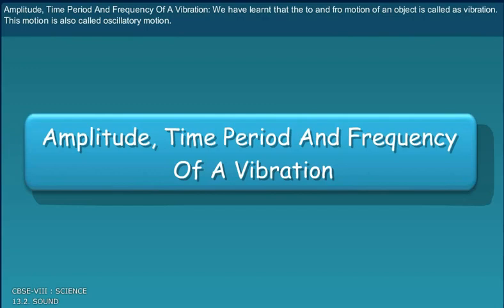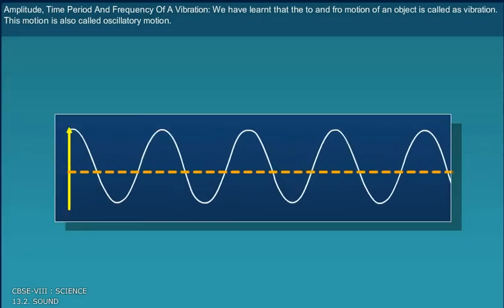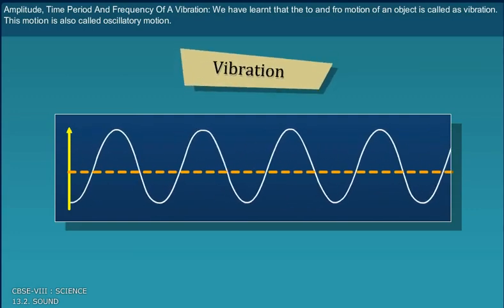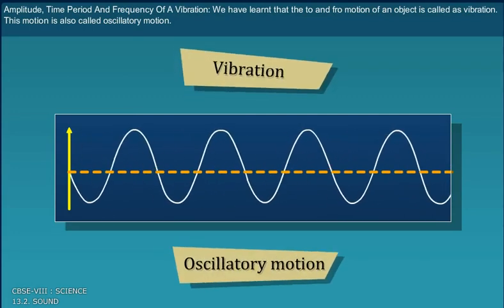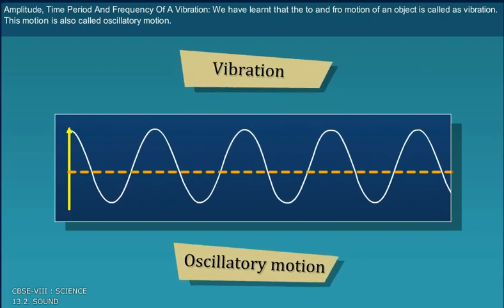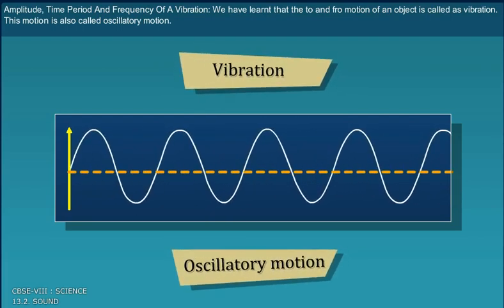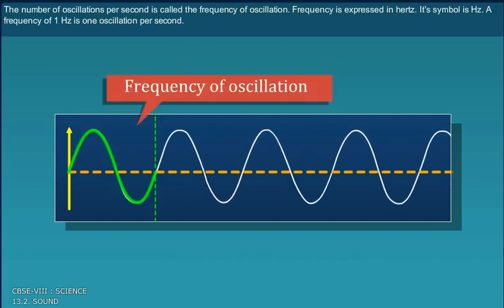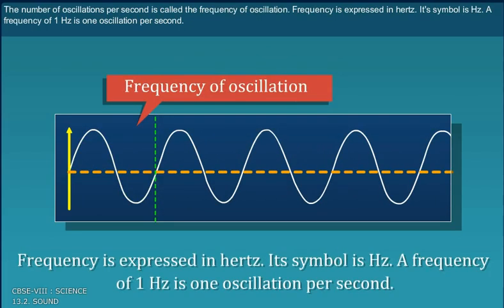Amplitude, time period and frequency of a vibration. We have learnt that the to and fro movement of an object is called as vibration. This motion is also called oscillatory motion. The number of oscillations per second is called the frequency of oscillation. Frequency is expressed in Hertz. Its symbol is Hz. A frequency of one Hertz is one oscillation per second.